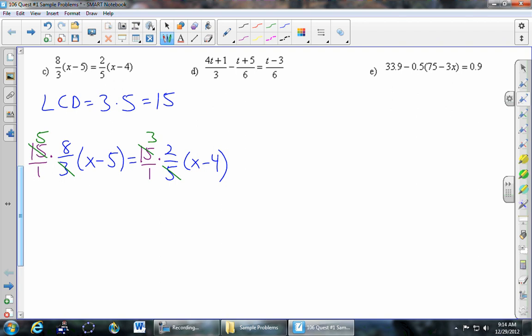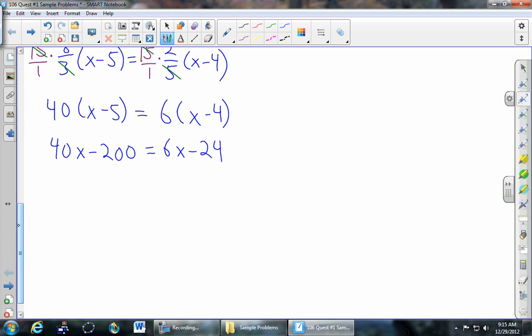And so I'm going to multiply the 5 and the 8 in the front here and get 40. And the x minus 5 hasn't gone anywhere. It's still in parentheses. And then in the front here, 3 times 2 is 6. And then still the parentheses. And now that we've gotten rid of the fractions, we're going to distribute the numbers through the parentheses. And let's move the 6x to the left-hand side by subtracting. So that gives me a 34x. And move the 200 to the right-hand side by adding. So that gives me 176.